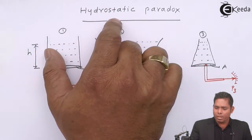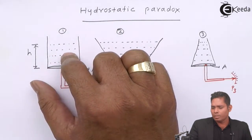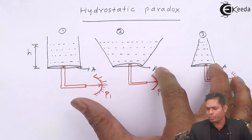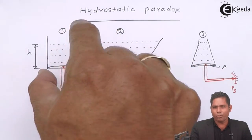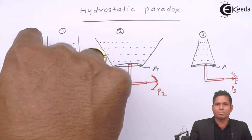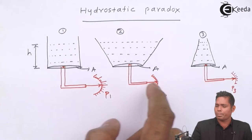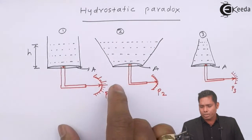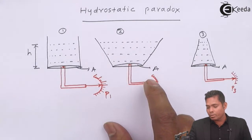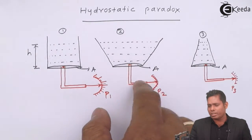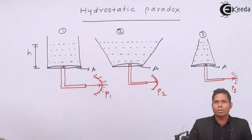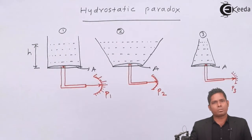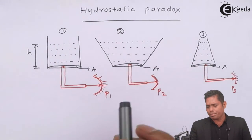This behavior of liquid — where vessels of equal base area filled to the same height but in different shapes exert equal pressure at the bottom — is beyond our expectation. It is exerting equal pressure, which is beyond our expectation. Therefore, this is called a paradox — something which is not expected.